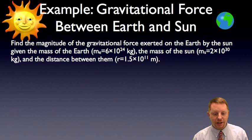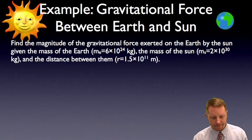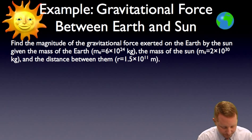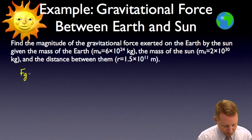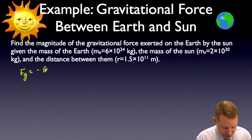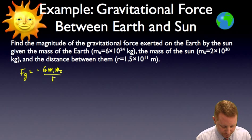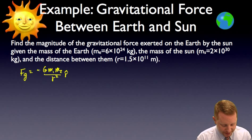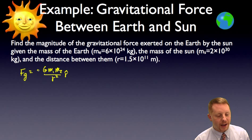Let's find the magnitude of the gravitational force exerted on the Earth by the Sun, given the mass of the Earth, the mass of the Sun, and the distance between them. Our formula for the magnitude of the force between them — the force of gravity — is equal to G m1 m2 over the square of the distance between them, in the direction of r-hat. Since it's obviously attractive, let's just focus on the magnitude.